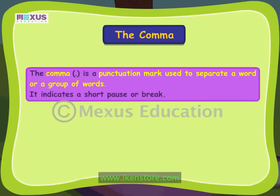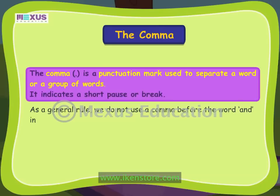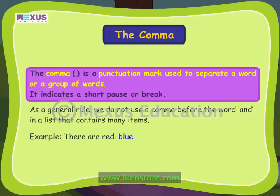There is one thing that you must remember while using commas. As a general rule, we do not use a comma before the word 'and' in a list that contains many items. Let us look at an example: There are red, blue, pink, and yellow flowers. Here there is a comma before and after the word 'and' — these commas are wrongly placed and have to be removed. So the correct manner is: Red, blue, pink, and yellow.